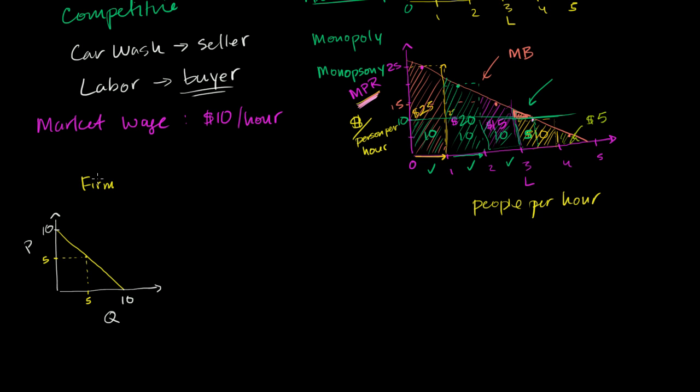So this is firm one. This is a firm's demand. Firm one. If we're talking about this demand for oranges, then this wouldn't be a firm. This would be a consumer or maybe a wholesaler or something like that. So this is firm one's demand for labor.